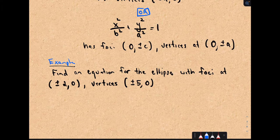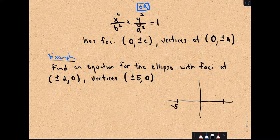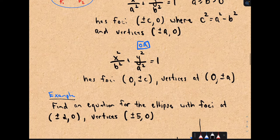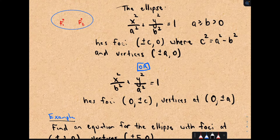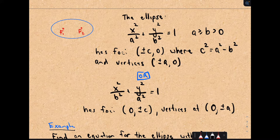Let's find an equation for the ellipse with foci at (±2, 0) and vertices at (±5, 0). The vertices are at -5 and +5, and I'll mark the foci with little x's on the graph. Since the foci and vertices are on the x-axis, we'll use the form x²/a² + y²/b² = 1. The vertices occur at ±a, so a = 5, and a² = 25 goes underneath x².